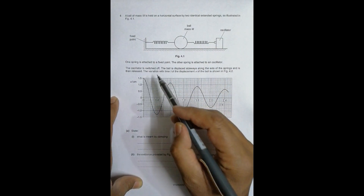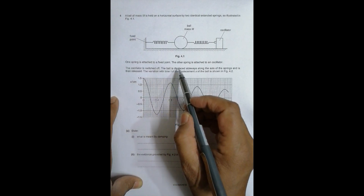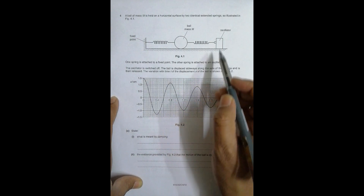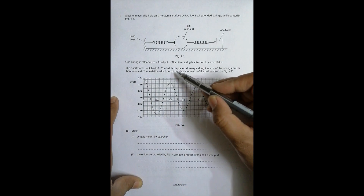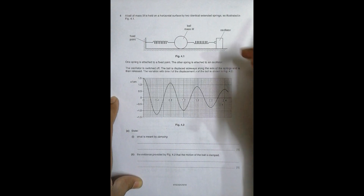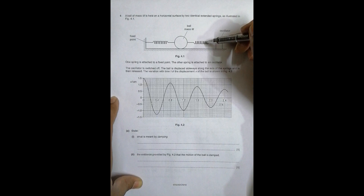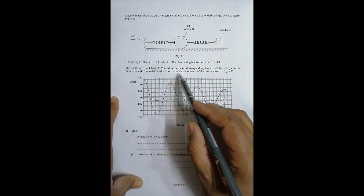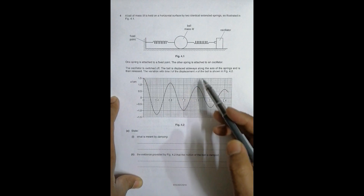Both springs are tight. One spring is attached to a fixed point and the other spring is attached to an oscillator. The oscillator is switched off. The ball is displaced sideways along the axis of the springs — one spring compresses and the other extends. When released, the variation with time t of the displacement x of the ball is shown in the graph.